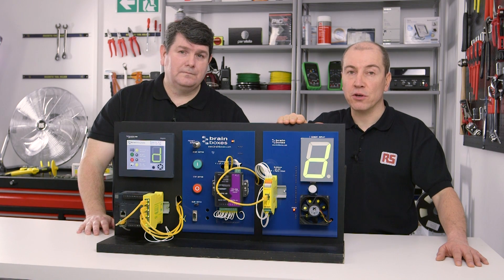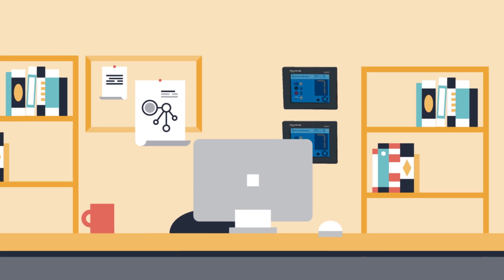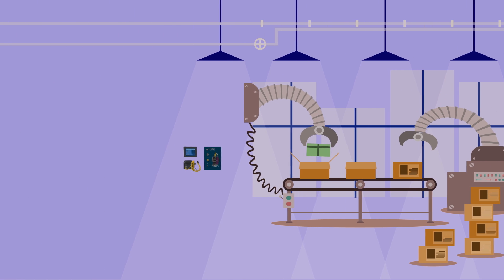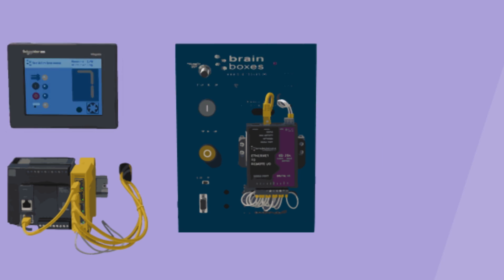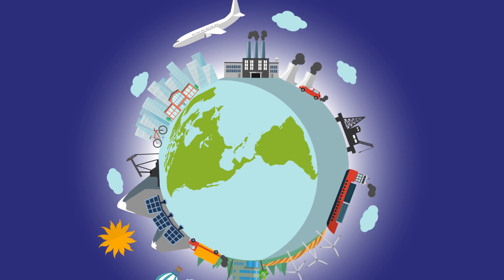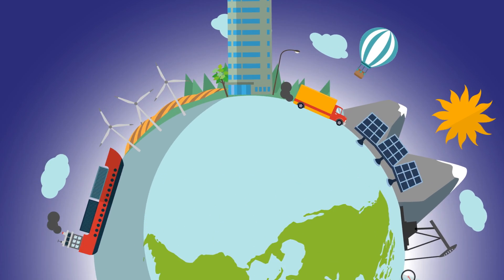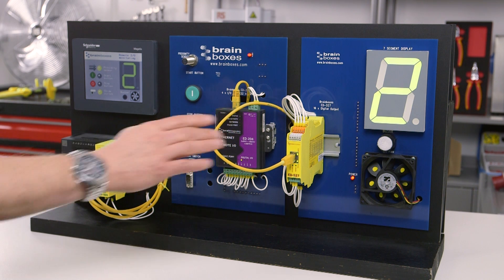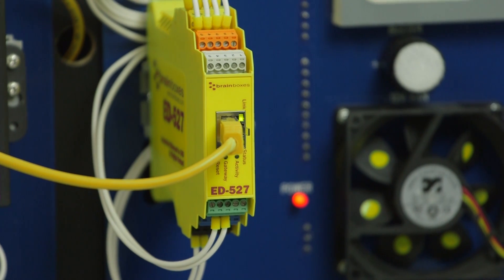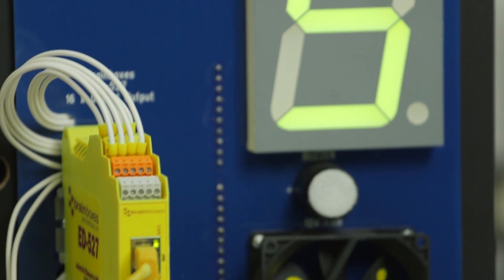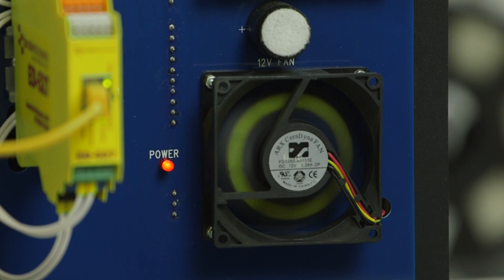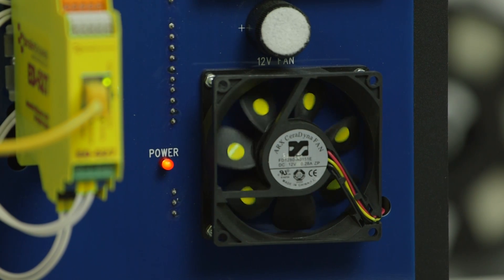We're now going to look at how that data can be used in a remote I/O application. With the remote I/O network now in place, this can easily be expanded to allow the PLC to control or be controlled remotely. Because the signals are now being transferred via Ethernet, this remote location can be on the same site or network or elsewhere on the Internet. In this demonstration we are using an ED527 Ethernet to digital output module to take the PLC batch count data and display that remotely. It also enables a calling fan and buzzer to be activated, which previously would have required additional cabling.